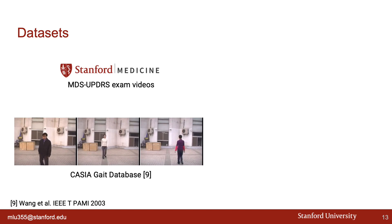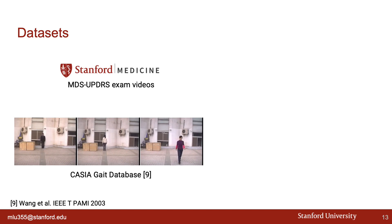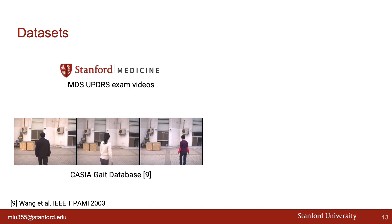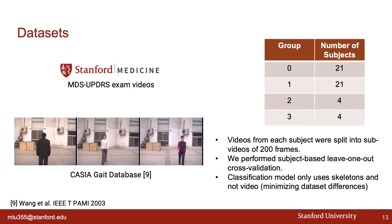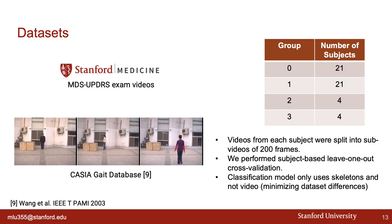For our dataset, we collected 30 MDS-UPDRS exam video recordings of PD patients from Stanford Medicine, along with their scores from a board-certified neurologist. Videos from this dataset are not shown for confidentiality reasons. We included 20 samples from the public CASIA Gait database to augment our normal control of non-PD human subjects. Videos from each subject were split into several sub-videos of 200 frames for data augmentation. We performed subject-based leave-one-out cross-validation. Our model only works on skeletons and not the videos, which minimizes the effect of dataset differences.